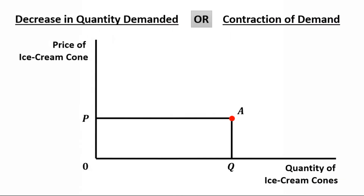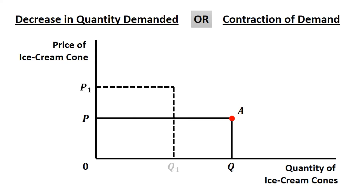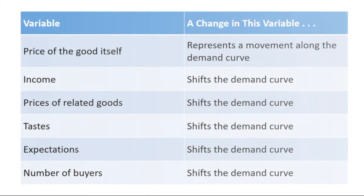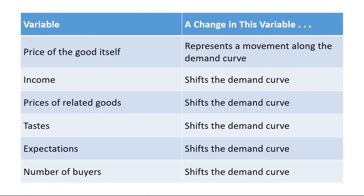Second case: decrease in quantity demanded, also called contraction of demand. Suppose that price of ice cream cone increases from OP to OP1 — in that case, quantity of ice cream cones will be reduced from OQ to OQ1. Movement from point A to point B shows an upward movement, so upward movement represents decrease in quantity demanded or contraction of demand. This table lists the variables that affect how much consumers choose to buy of any good: a change in the good's price represents a movement along demand curve, whereas a change in one of the other variables shifts the demand curve.